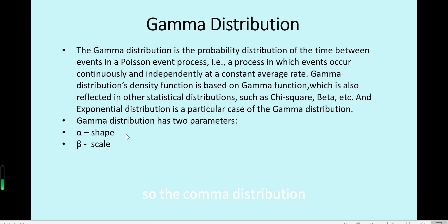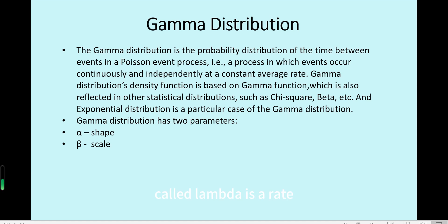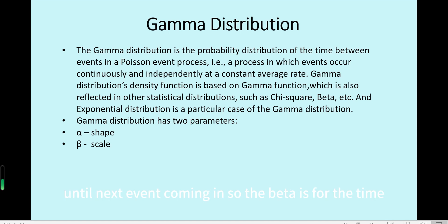The gamma distribution has two parameters: alpha and beta. Alpha is the shape. For example, in the exponential distribution, alpha is 1, because we want to know the probability of the time until the next event — one point event. Beta is what we have called lambda. Lambda is the rate; beta is the reciprocal of lambda. So in the exponential distribution, beta represents the average time until the next event — it is for the time.